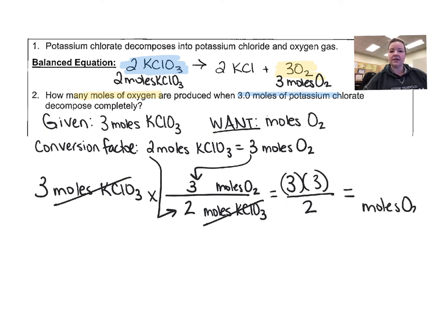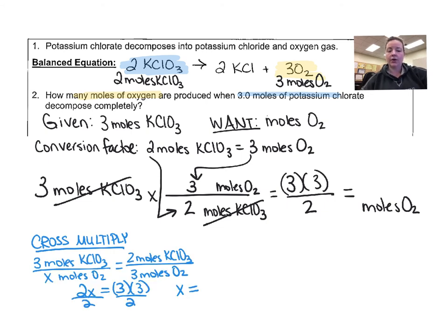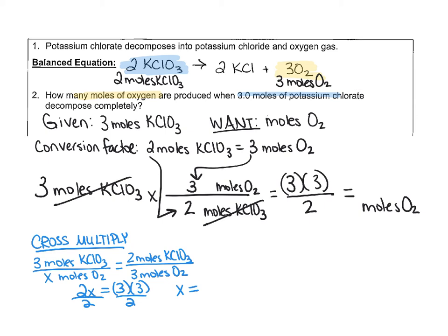Notice how our moles of potassium chlorate cancel out so that our answer is in moles of oxygen. I will also post the cross multiply method in another color. Go ahead and calculate your answer and then unpause the video to check. Mathematically, we're going to do 3 times 3 divided by 2, which is 9 divided by 2, which means you are going to need 4.5 moles of oxygen.